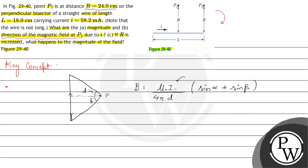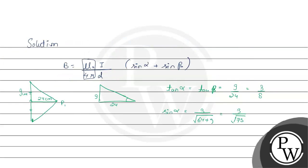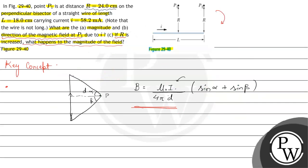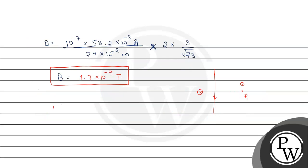In the third part, if R is increased, what happens to the magnetic field? We can see in the formula that capital R is our small d. B is inversely proportional to R, and hence if R is increased then B will automatically decrease. So these are all the answers of this solution. I hope you understood it well. Thank you.